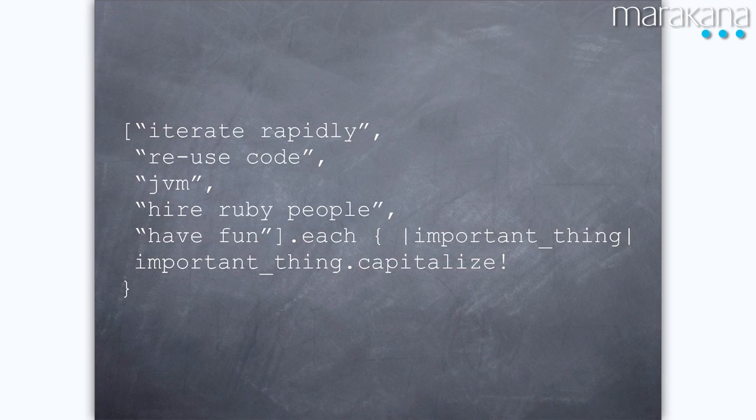So why are we trying to use JRuby? Code speaks louder than words. We wanted to be able to iterate rapidly. We wanted to reuse a lot of our existing Java infrastructure — libraries to authenticate, libraries to log, libraries to track. The JVM is an awesome piece of software: tons of monitoring, heavily tuned, great and tunable garbage collection. We also want to be able to hire Ruby people, expand our talent pool, and we want to have fun coding in Ruby.